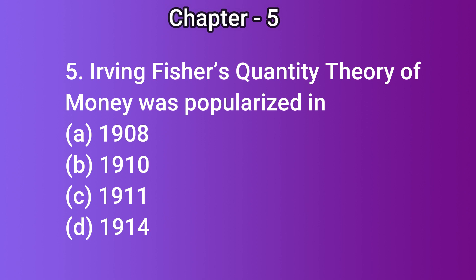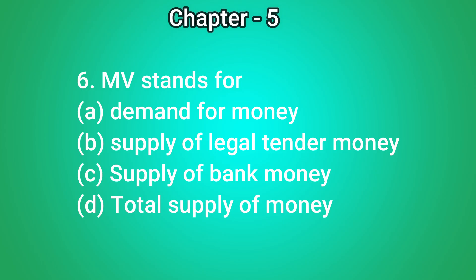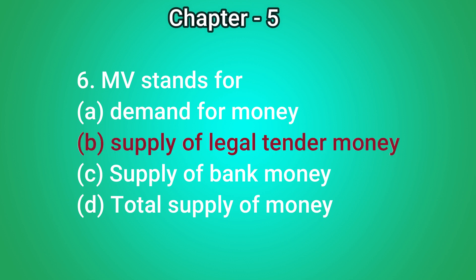Question number 5: Irving Fisher's quantity theory of money was popularized in — A) 1908, B) 1910, C) 1911, D) 1914. The correct answer is C) 1911. Question number 6: MV stands for — A) demand for money, B) supply of legal tender money, C) supply of bank money, D) total supply of money. The correct answer is B) supply of legal tender money.